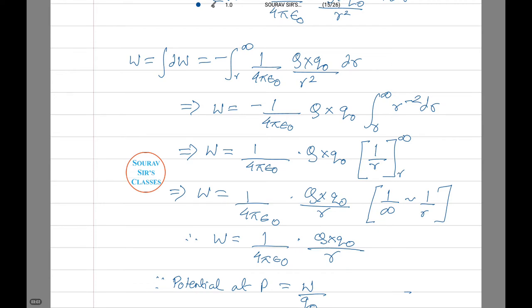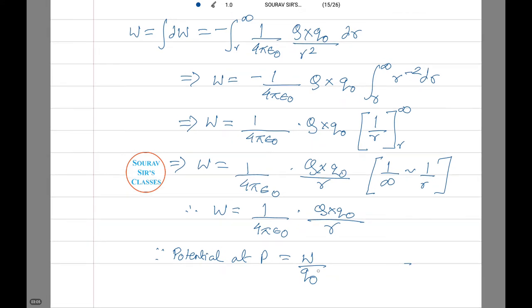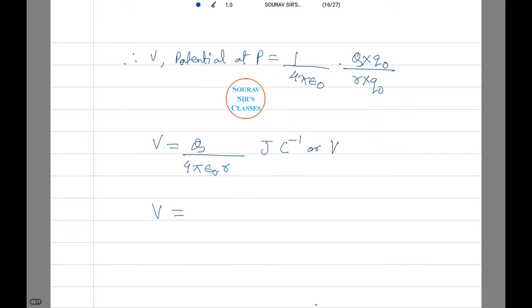Now we calculate the potential at P which is equals to W by Q₀. Therefore, V potential at P equals 1 by 4πε₀ into Q into Q₀ by R into Q₀. Now V equals Q by 4πε₀R joule per coulomb or volt. Therefore, V equals 1 by 4πε₀ into Q by R. Hence, we have proved the question that was given to us. Moving on to the next question.